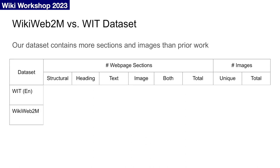We curate a new dataset, the Wikipedia Webpage 2 Million, or WikiWeb2M, which includes over 2 million English Wikipedia articles. We keep all sections, text, and images, and retain section structure to relate content from a single webpage.